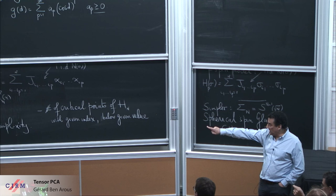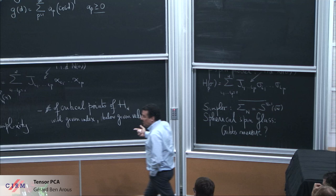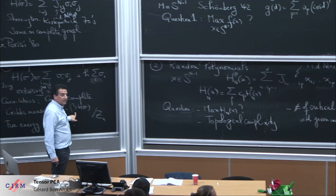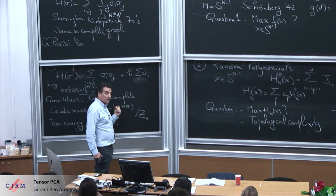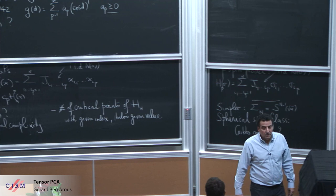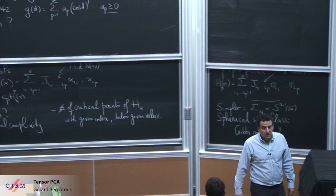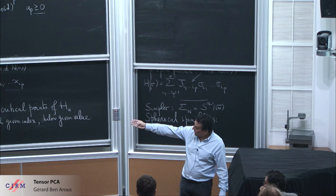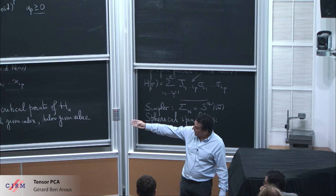Let me remind you what a Gibbs measure is — it's just exp(-beta H(sigma)) normalized. Z is just a normalizing constant so this is a probability measure. When you're on the hypercube it's a discrete sum; on the sphere it's an integral over the sphere. Beta is a number — the inverse of temperature. Beta equals zero: the Gibbs measure is uniform — infinite temperature. Large beta: very low temperature. You want to understand what happens when the temperature changes — that's the phase transition.